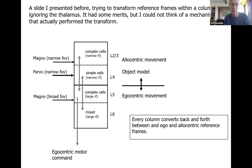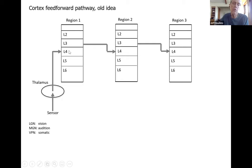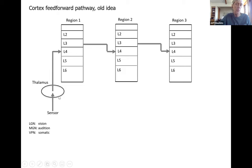Today I'm going to talk about a different approach — an alternate to that layer-based thinking. We're still trying to figure out how this happens. The traditional way of thinking about the thalamus is that it was a gateway into the cortex: information comes from a sensor, goes through the thalamus, then to the cortex into layer four, and layer three of one region projects to layer four of the next region. This is the classic feed-forward pathway. The thalamus was just seen as an entryway, represented by the well-known subdivisions: LGN for visual input, MGN for auditory, and VPN for somatic sensory.